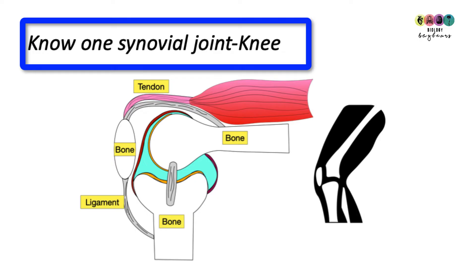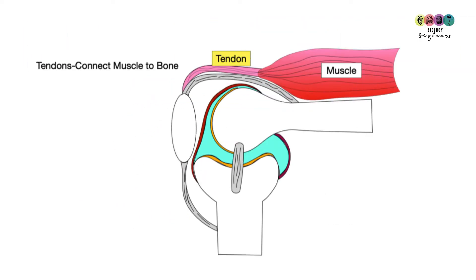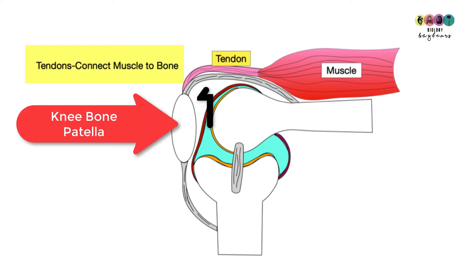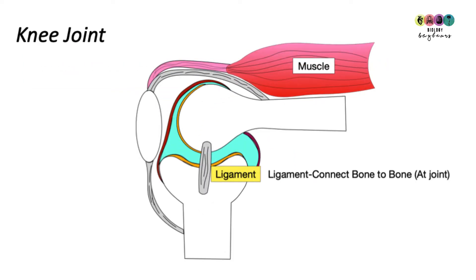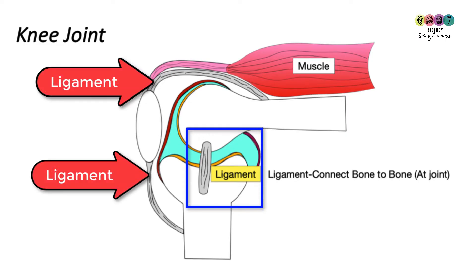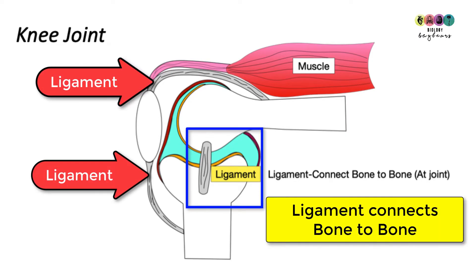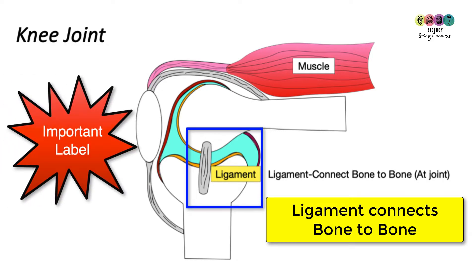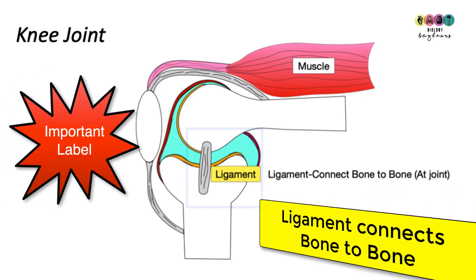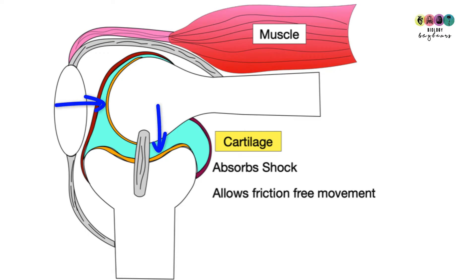As part of our course we have to know one synovial joint in detail, and the knee is easiest to learn. Let's go through this diagram. The tendon is what attaches the muscle to the bone — it's not really part of the joint but it could appear in a diagram. The first true label associated with the synovial joint is a ligament, and a ligament attaches or connects bone to bone. That's really important, and if you're doing ordinary level, every time you've been asked to label a synovial joint, one of the key labels they looked for was a ligament.